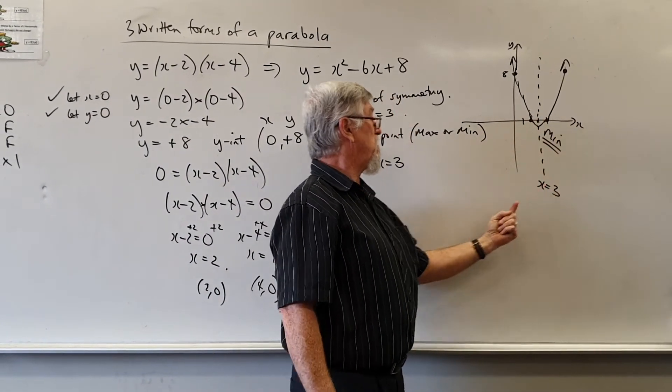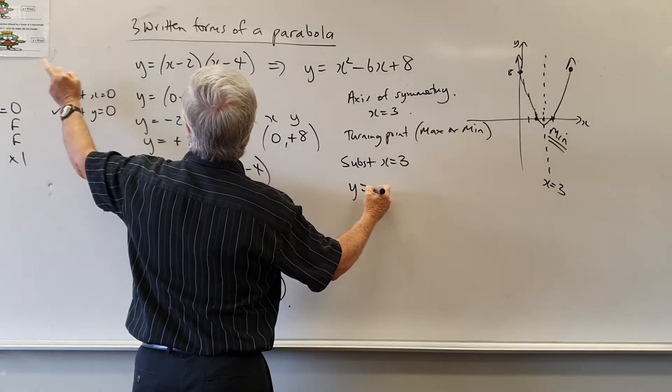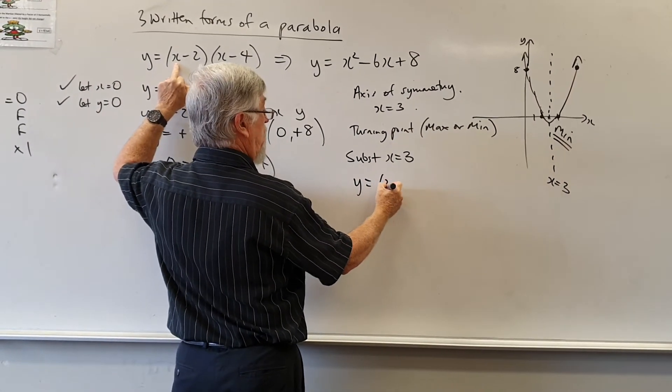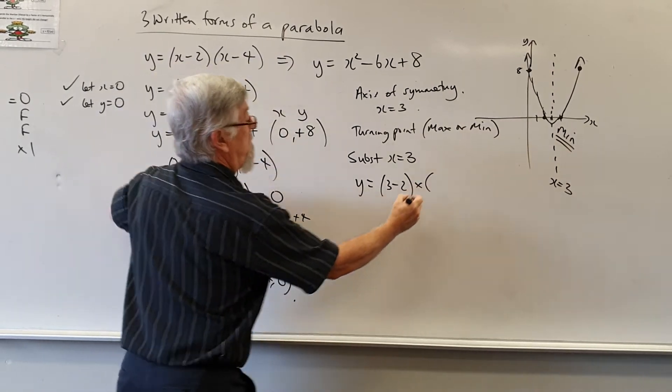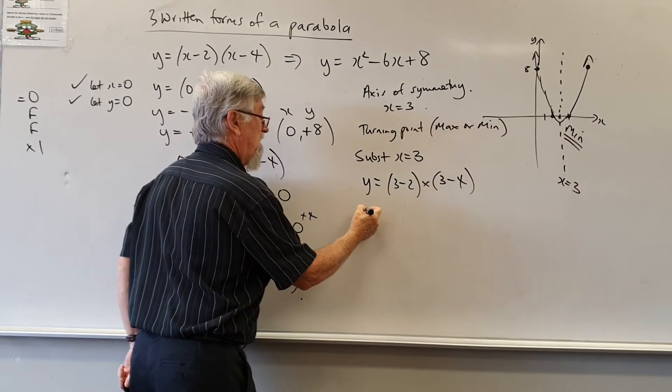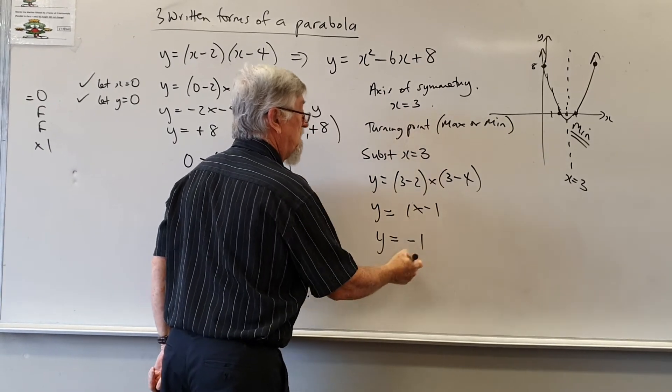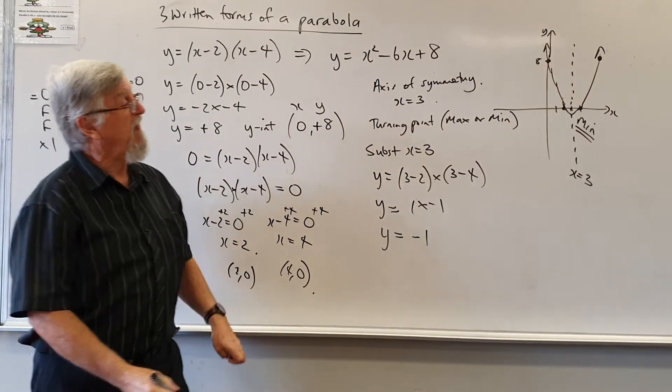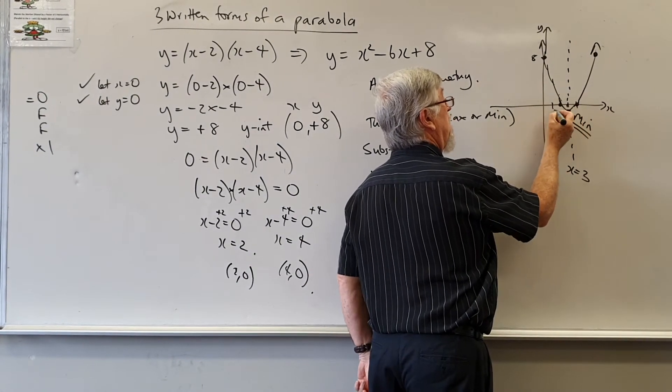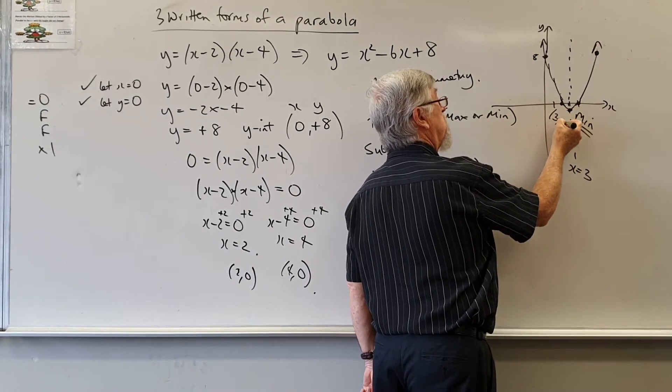In this case it's going to be below 3. So I've got y equals back to here. 3 minus 2 for the substitution. 3 minus 4. Now I've got y equals 1 times minus 1 and y equals minus 1. If you look at the graph there it's pretty obvious that it's going to be there at minus 1. So I've got 3 and minus 1.